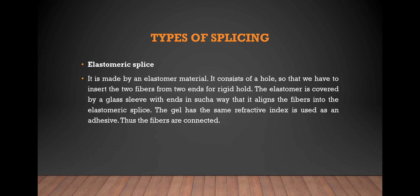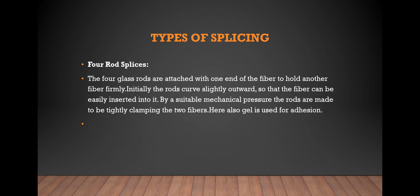Next are the different types of splicing. The first one is the elastometric splice, which is made up of elastomer material. It consists of a hole so that we insert two fibers from two ends. A rigid hole is caused by a glass sleeve that aligns the fibers. A gel with the same refractive index is used as an adhesive, thus connecting the fibers.